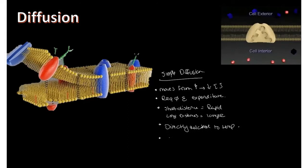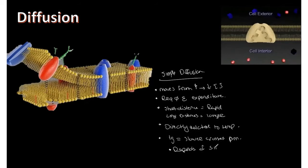Diffusion is also dependent on the total surface area and thickness of the plasma membrane — a thicker membrane means more distance to cross, so it takes longer. It's kind of like driving across a highway versus a range road: one takes way more time than the other.